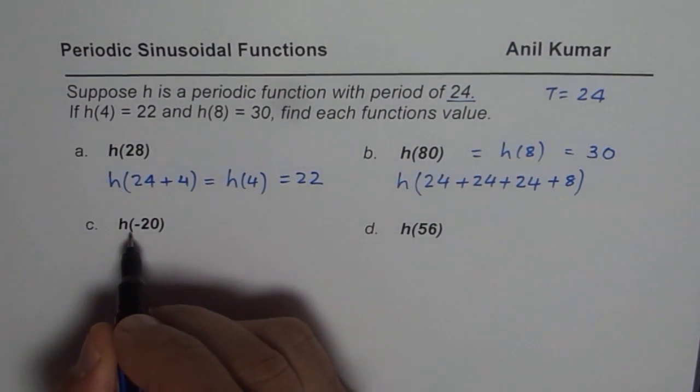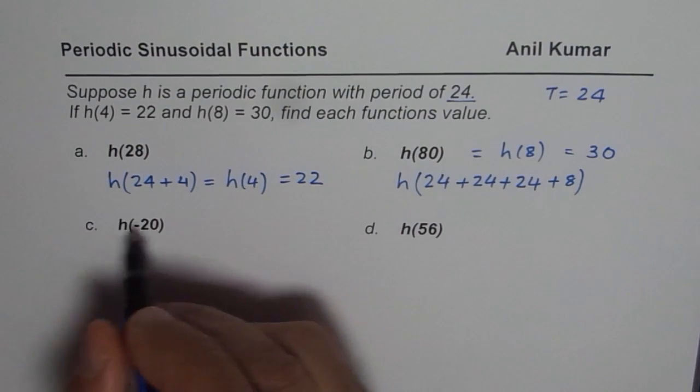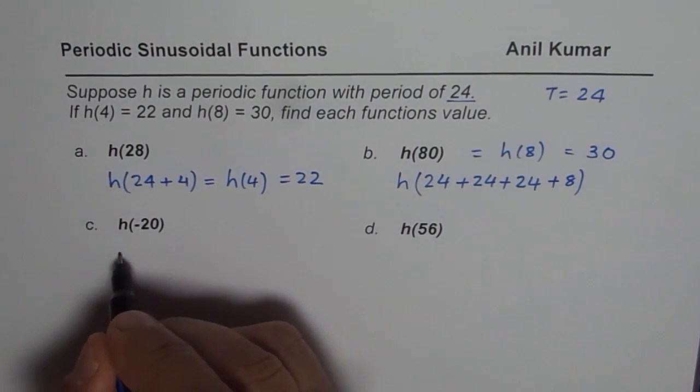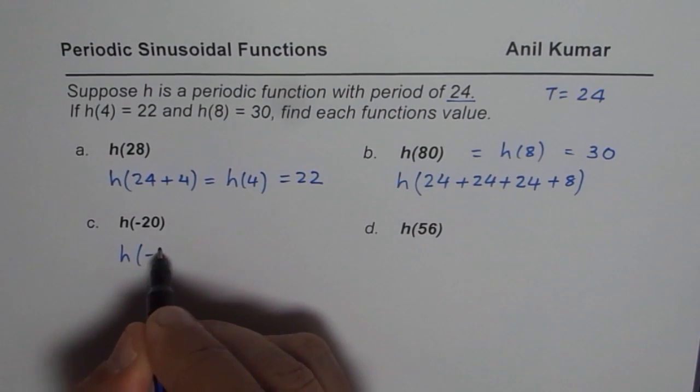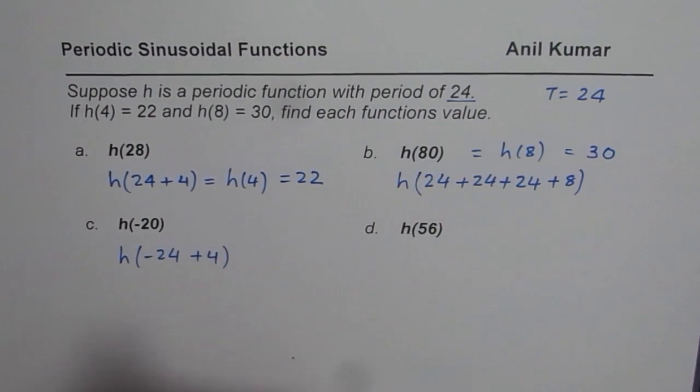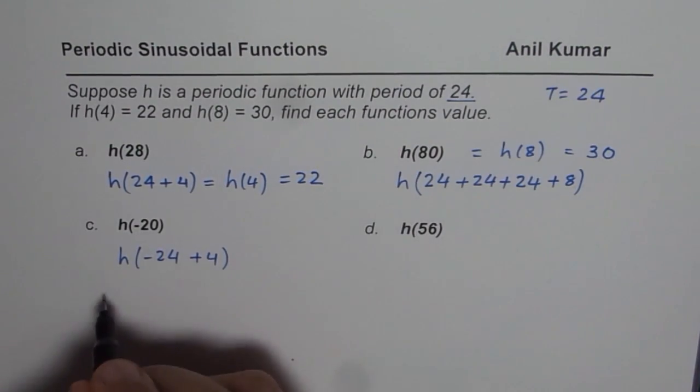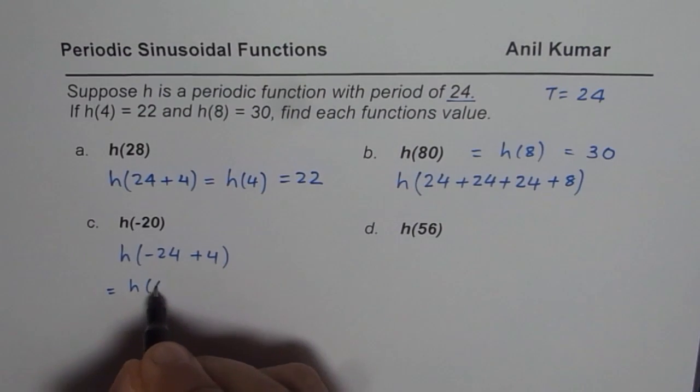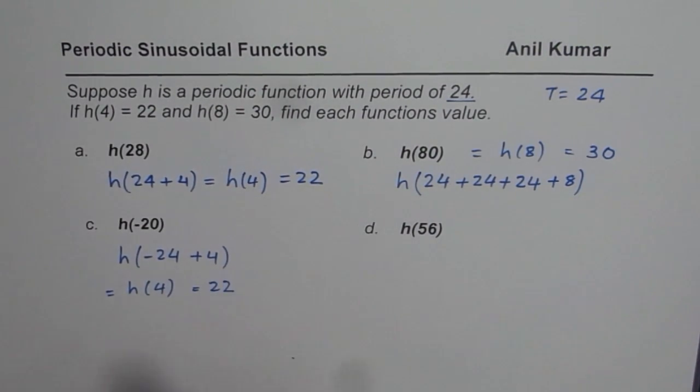Now when we say H(-20), we can go backwards also. It's periodic. So we could write this as -24 and then if I add 4 to it, I get H(-20). So therefore, this could be written as H(4) and that is 22.